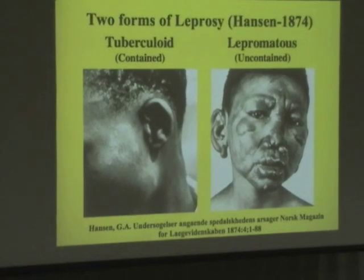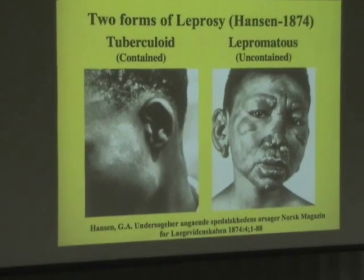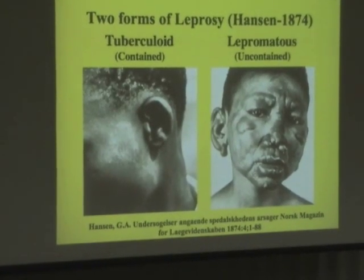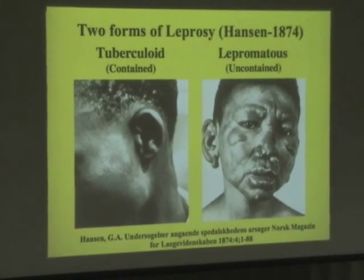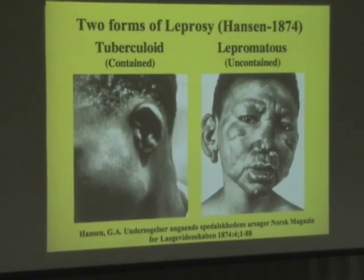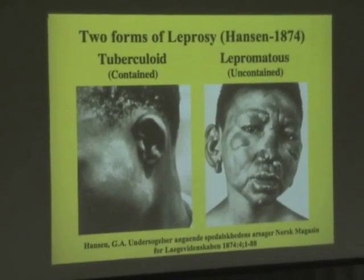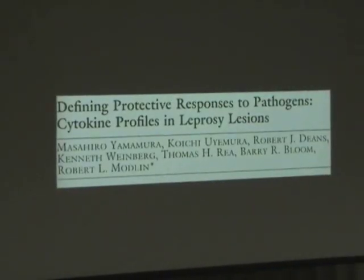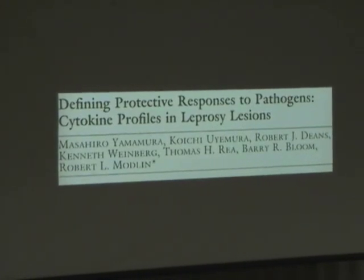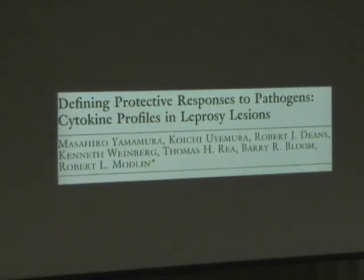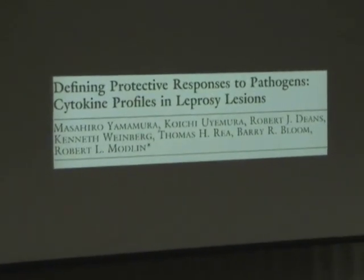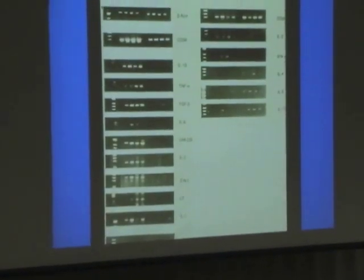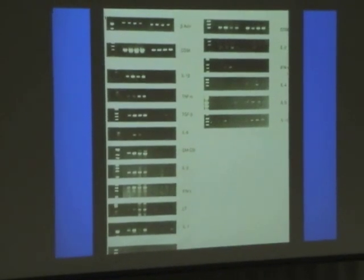The best example of which is leprosy, which was first described in 1874, and we had a lovely introduction to it earlier today. There was a study published in Science in about 1992 out of Modlin's group at Einstein, where they looked at the cytokine profiles in the two forms of leprosy.